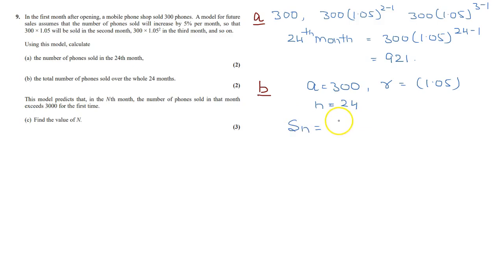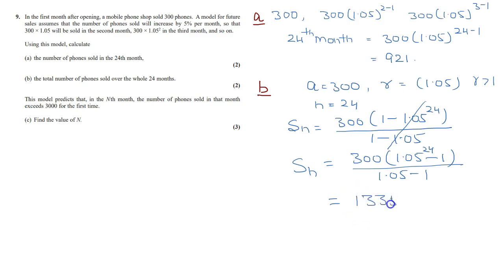Sn will be a times 1 minus r to the power n over 1 minus r. Here we can see that r is greater than 1, so don't write it like this. You write it like S24 or Sn is equal to 300 times 1.05 to the power n minus 1 over 1.05 minus 1, because this r is greater than 1. We use this formula, if it is less than 1, we use this formula. So it is 13,351 number of phones.